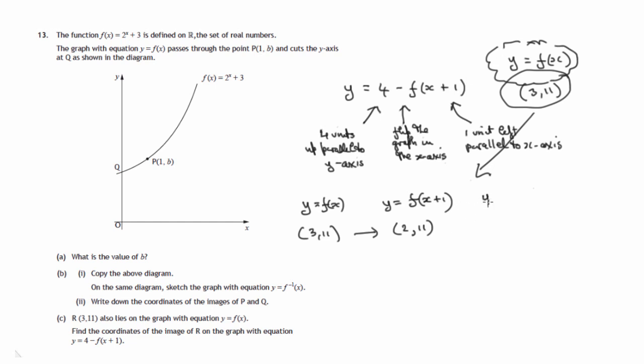We then flip this graph in the x-axis. In other words, the height of a point being 11, it will now be minus 11. And then finally, to get to the graph y equals 4 minus f of x plus 1, we add 4 to this graph. So this point will move up 4 units and it will come to minus 7 for the y-coordinate.